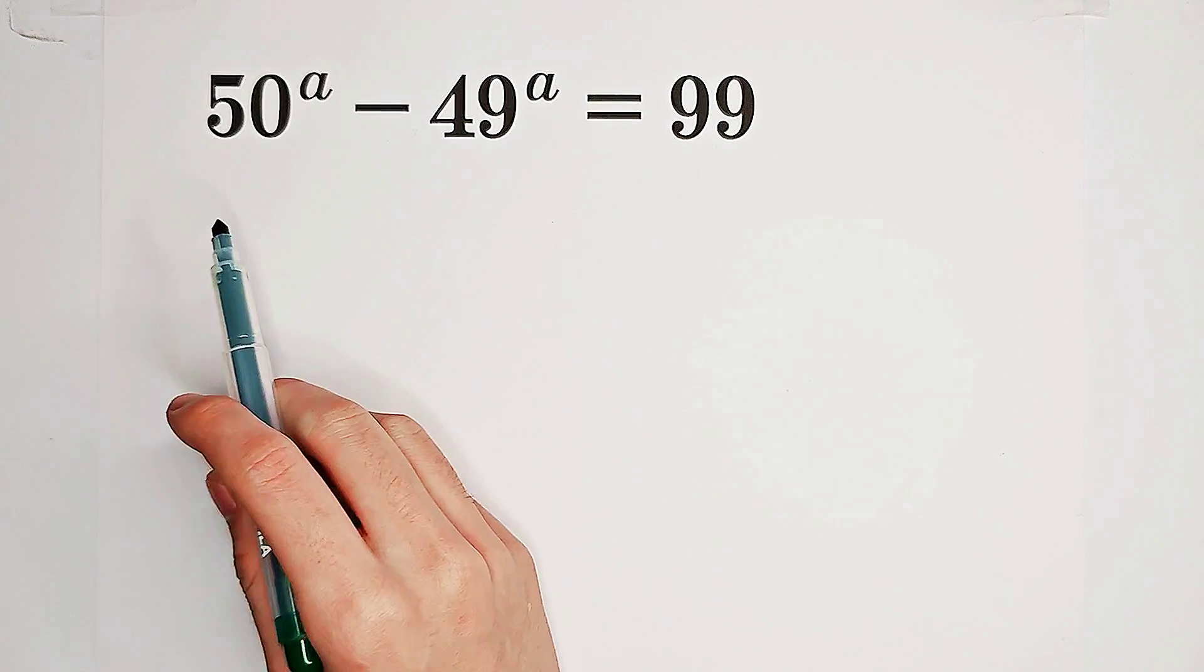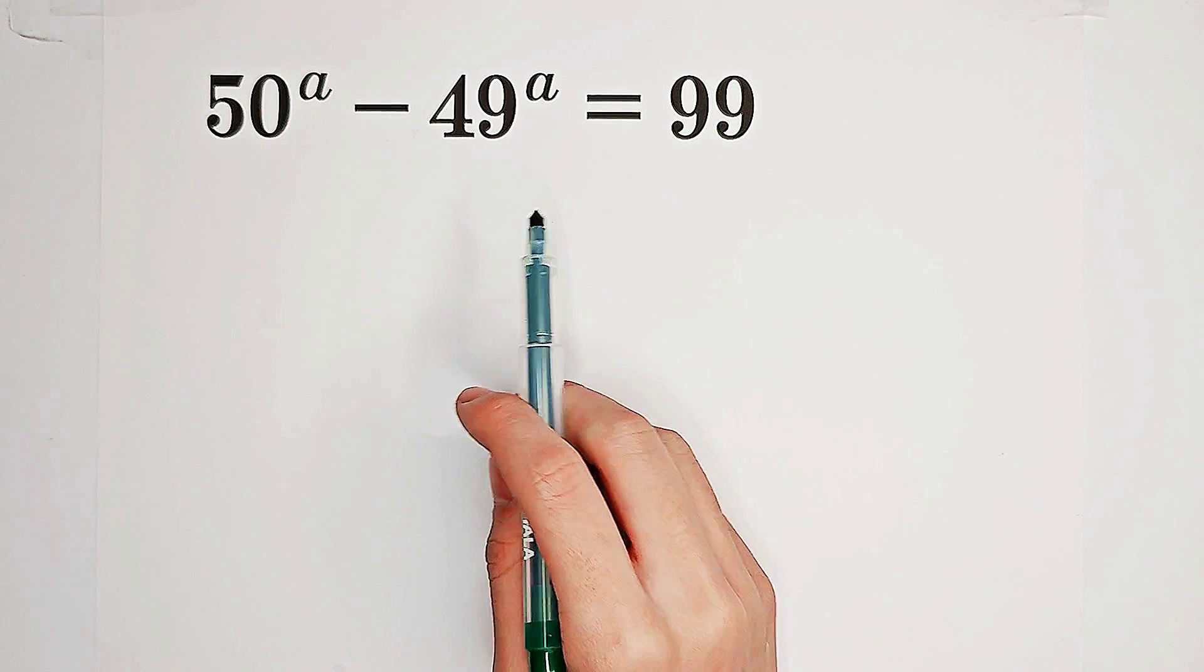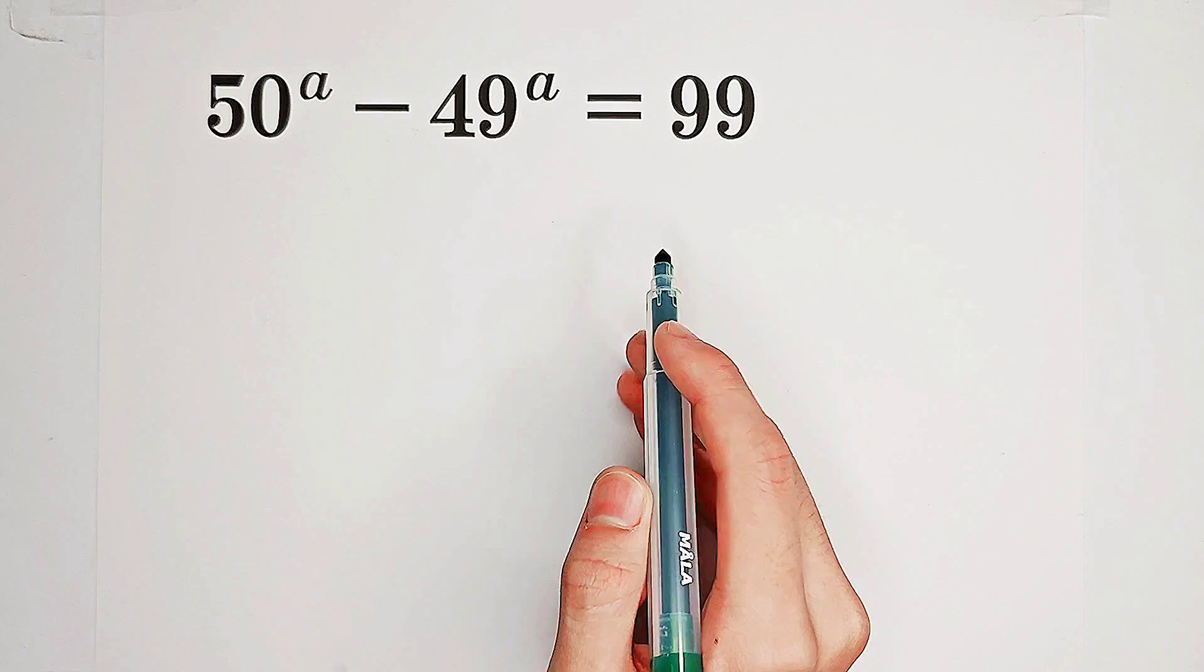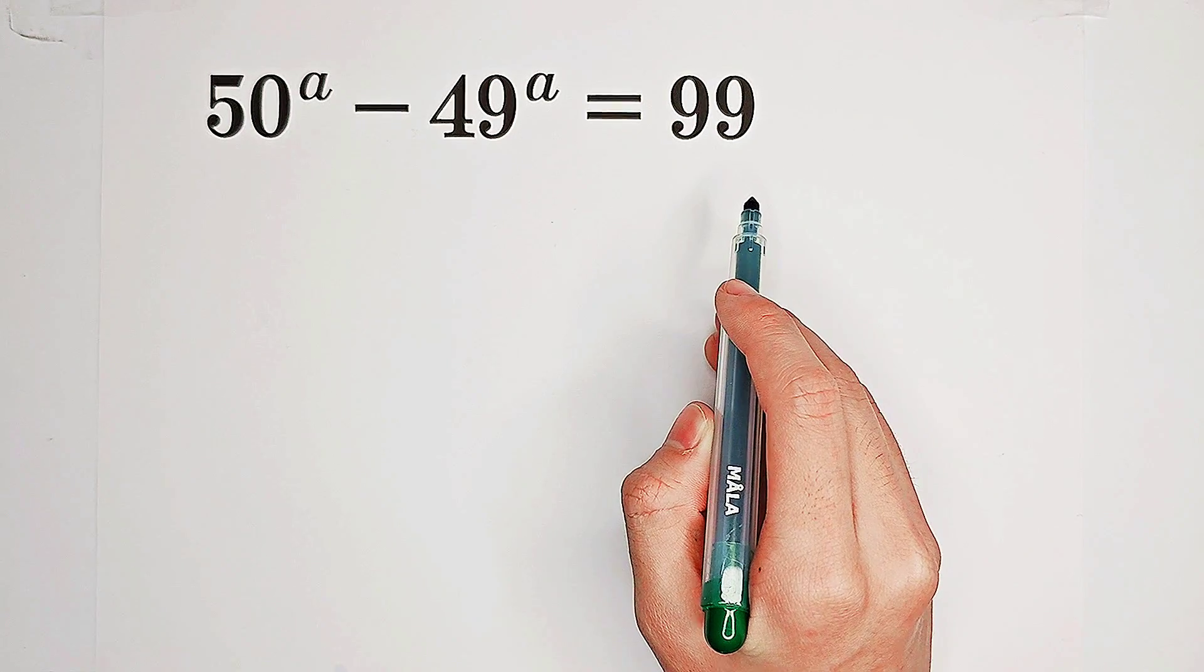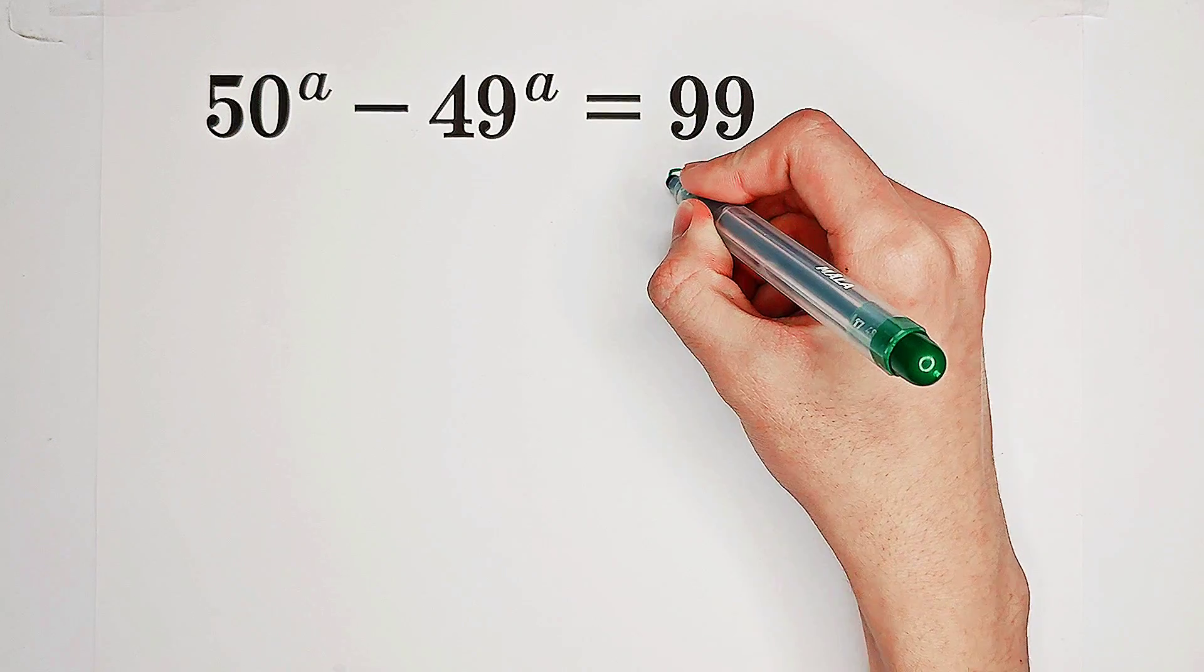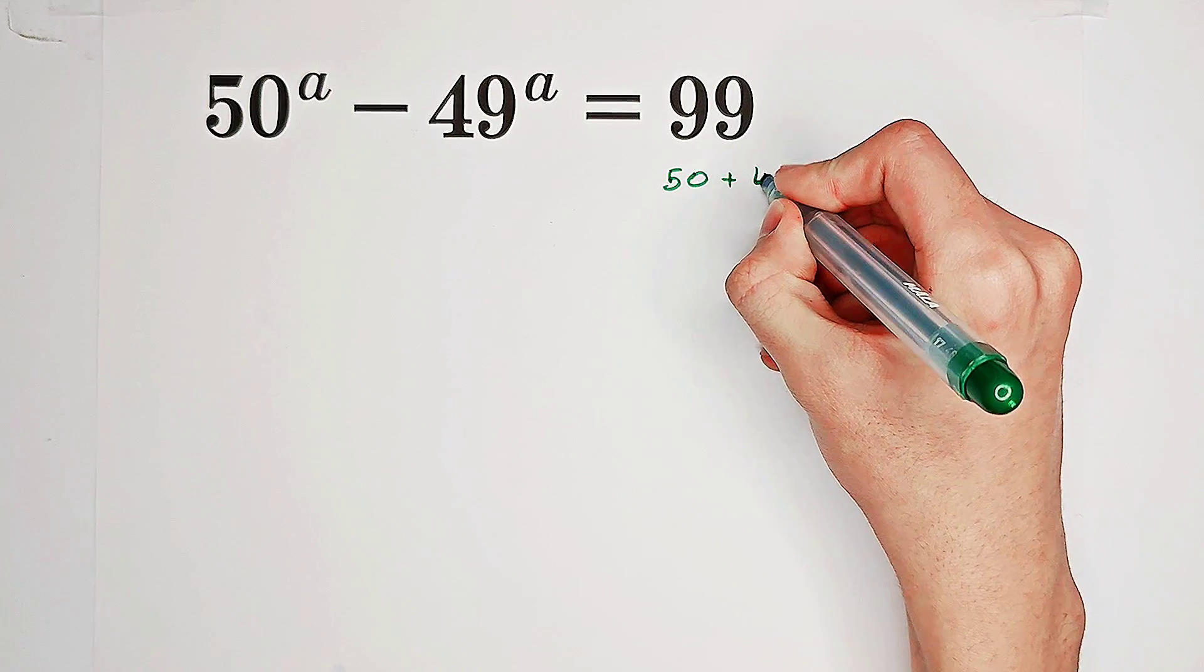Solve for A such that 50 to the power of A minus 49 to the power of A equals 99. What shall we do? First, we've noticed that 99 is the sum of 50 and 49.